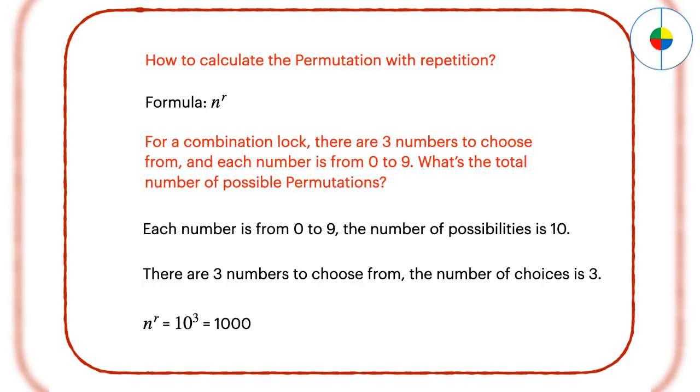To calculate the permutation with repetition, the formula is n to the power of r, while n is the number of possibilities, and r is the number of choices. For example, for a combination lock, there are 3 numbers to choose from, and each number is from 0 to 9. The permutation will be 1,000.